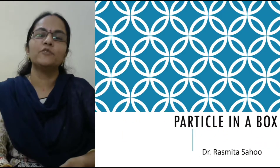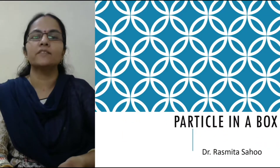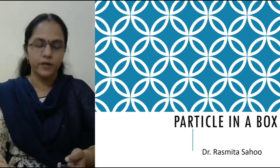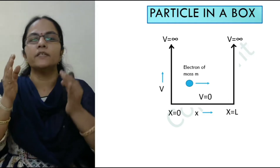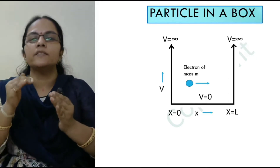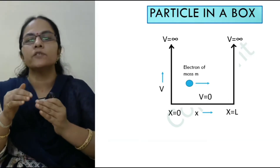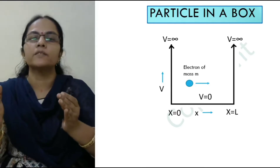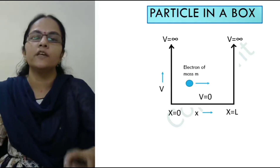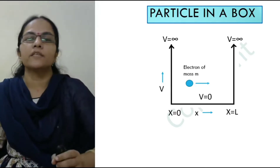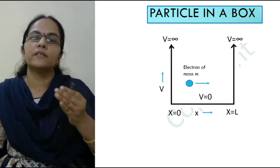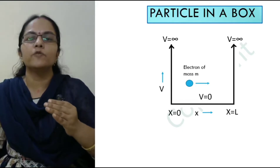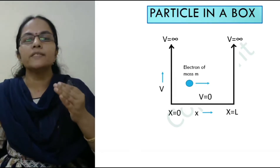Today we will continue our discussion on particle in a box. We have considered a potential well inside which the potential is zero, and outside that box the potential is infinity. We have seen an electron of mass m moving inside that box, and we have calculated the wave function and energy for that moving electron.